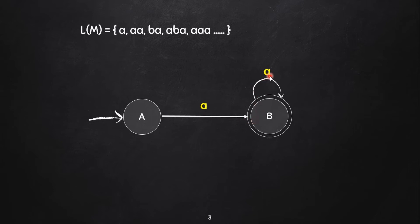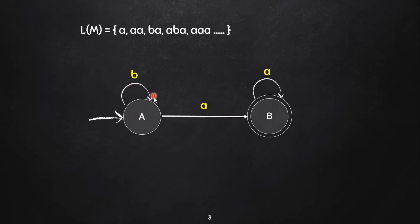If we have a loop, we have a final state. Now, if we have an initial state of B, we have an input A or B. If we have a loop, we have a state of A. Then we have a final state.